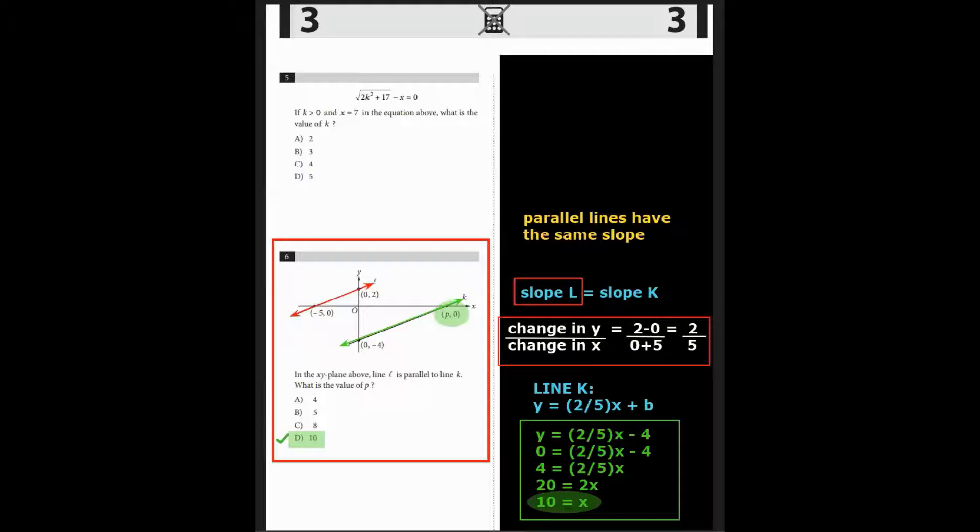The change in y over the change in x equals 2 minus 0 over 0 minus minus 5, which is a slope ratio of 2 fifths. That must be the same also for the green line K in the picture. So y equals 2 fifths x plus b. Well, we have the point for the y-intercept b at 0 negative 4, so b is negative 4.